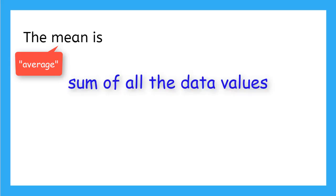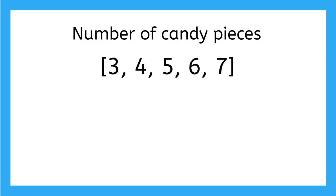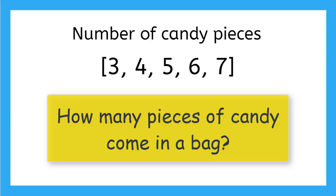Let's start with the mean. The mean, also called the average of a set of data, is the sum of all the data values added together and then divided by the total number of data values in the set. So let's find the mean of our data set. This will answer our statistical question, how many pieces of candy on average are in a bag?